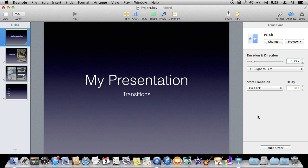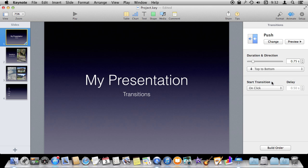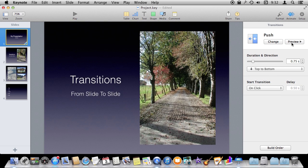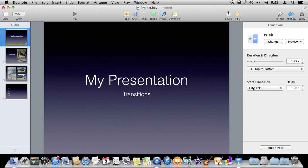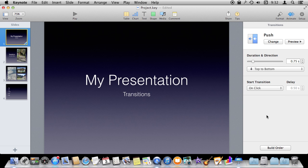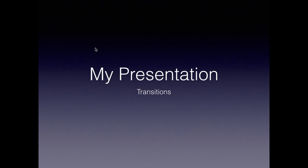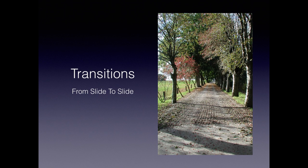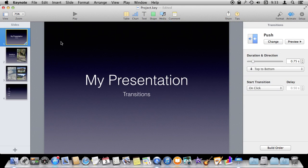We'll select Push and now we get to change some things like duration, or whether it goes right to left or top to bottom. Let's do top to bottom. We can preview it like that. We can say we want the transition to go on click or automatically. Automatically means you go from slide one to slide two without doing anything, so we don't necessarily want to do that. Now that we've got this in place we can hit Play and when I click we get the transition from one to the other.